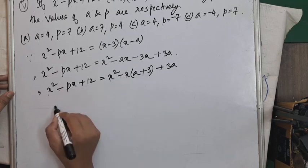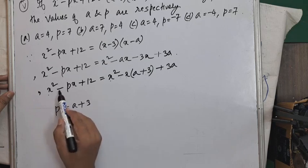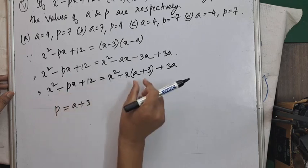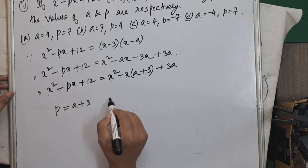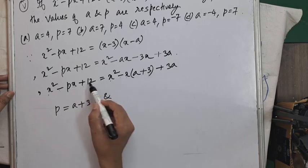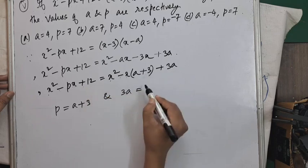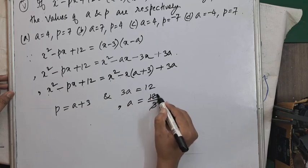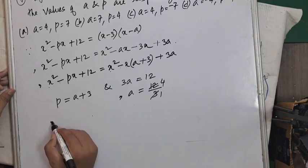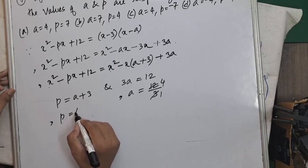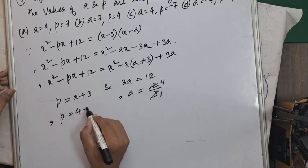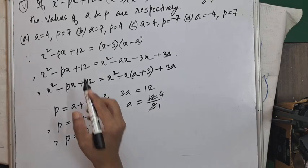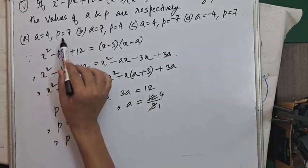Comparing coefficients: p = a+3 and 3a = 12, so a = 4. Then p = 4+3 = 7. Therefore a=4 and p=7, and option A is the correct answer.